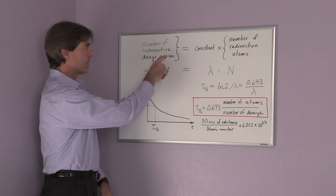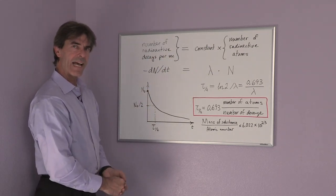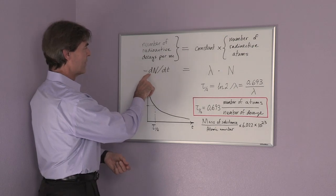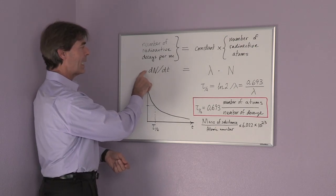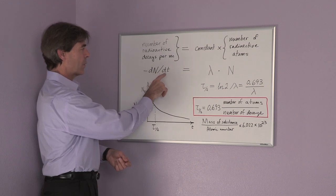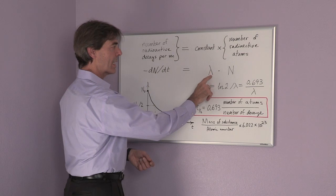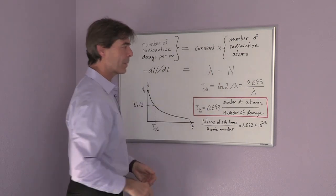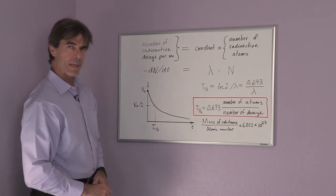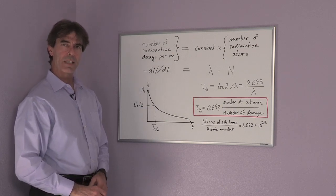a minus: the change in number of atoms with time is equal to lambda times N. This is a well-known formula that can be solved, and the solution is an exponential decay.